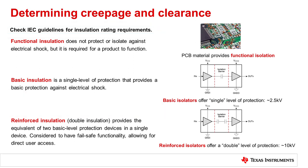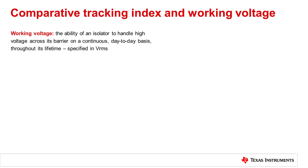Now that we know the role of isolation rating, we can look at the relationship between isolator components and creepage and clearance requirements. Working voltage, device material level, and environmental levels of altitude and pollution will all play a role in minimum creepage and clearance requirements. Working voltage is a device-level specification used to quantify the ability of an isolator to handle high voltage across its barrier on a continuous, day-to-day basis throughout its lifetime.